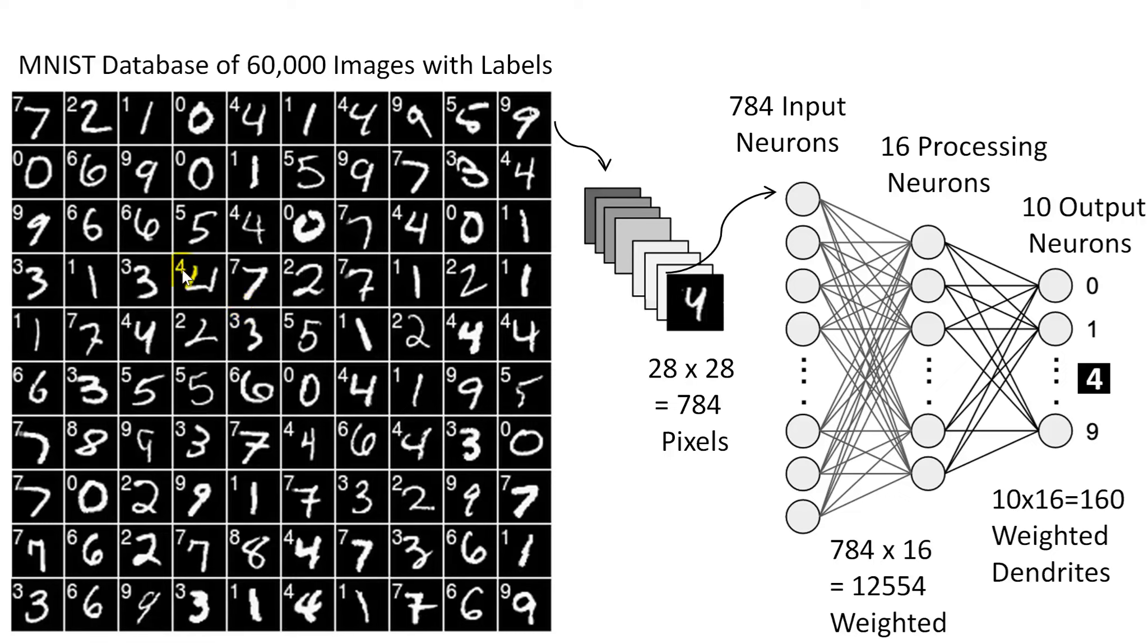Now the way this works is we're basically feeding all the 60,000 images one by one minus the label through the network. The images are 28 times 28 pixels, so that's 784 pixels. So we need 784 input neurons. You can think of this as your visual cortex.